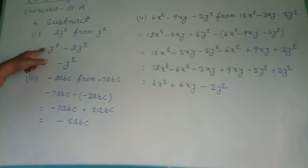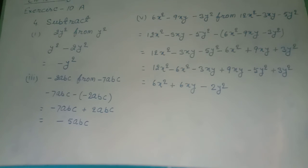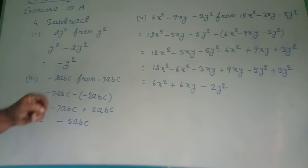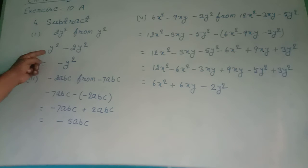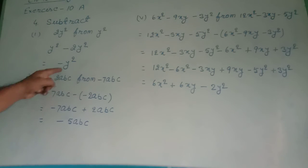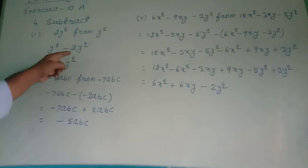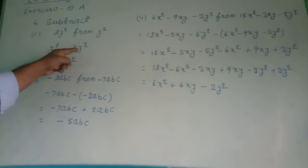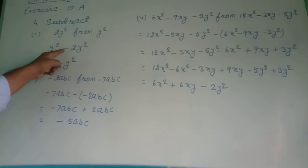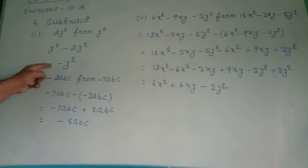We subtract smaller from greater: 2y² minus y² equals y². But the sign comes of the greater term, which is 2y² with minus sign. So minus will come. Answer became minus y².